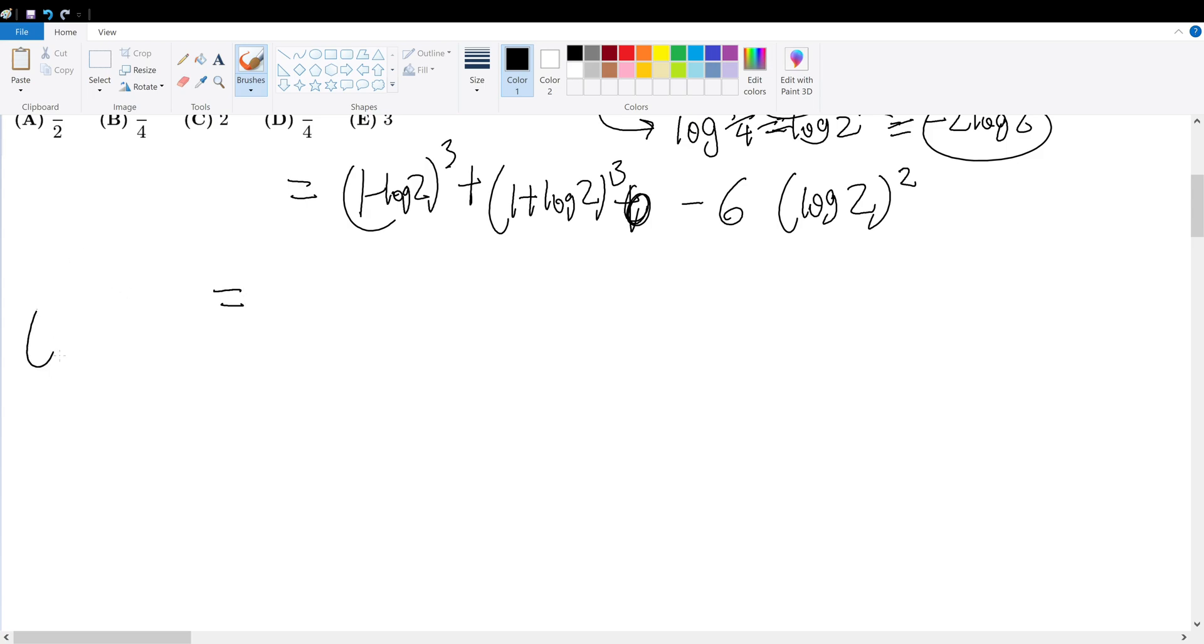We know that A plus B cubed is A cubed plus 3 A squared B plus 3 A B squared plus B cubed. This could be simplified into 1 minus 3 X. Let's set X to be equal to log 2 so that we could write less and it will look much cleaner.